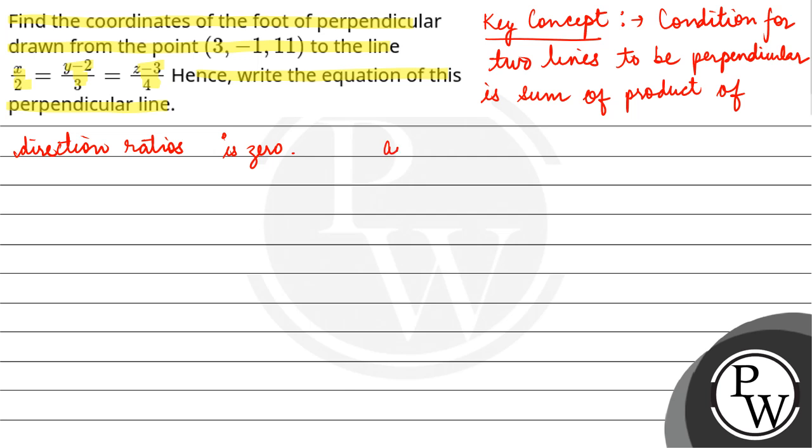So let's say you have direction ratios A1, B1, C1 for the first line and for the other one, it is A2, B2, and C2. So A1·A2 + B1·B2 + C1·C2 equals to zero.